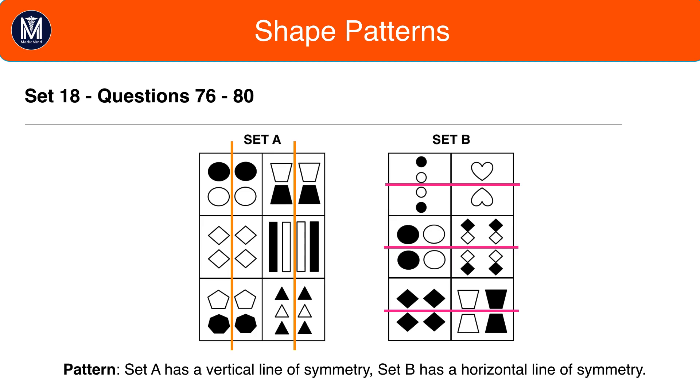The pattern here is that set A has a vertical line of symmetry and set B has a horizontal line of symmetry. When you see many similar shapes, be on the lookout for a position pattern or a shape or colour pattern.